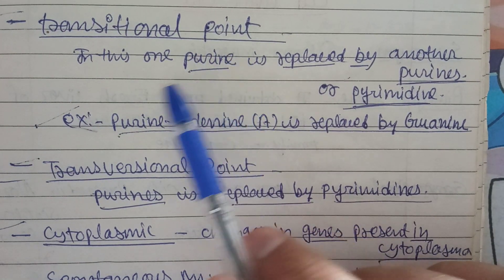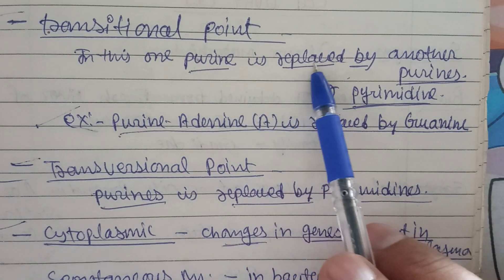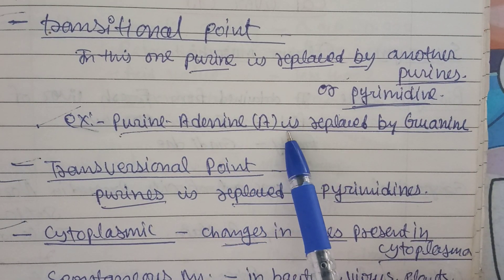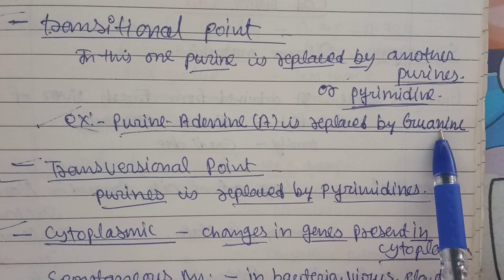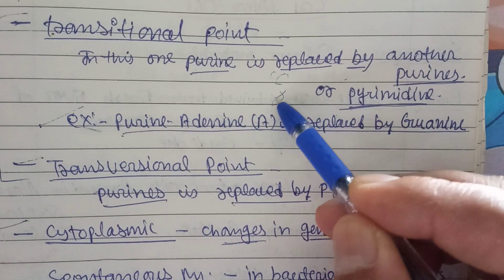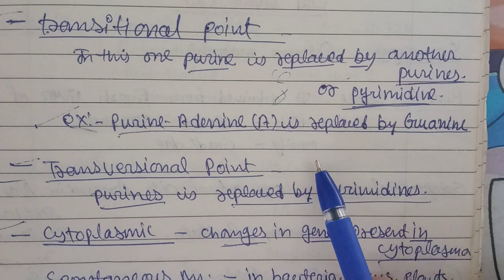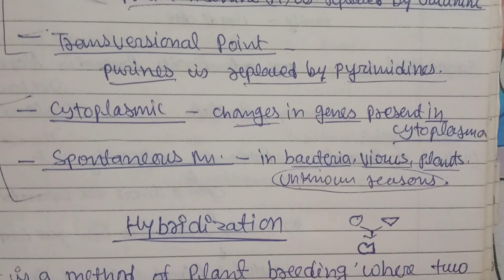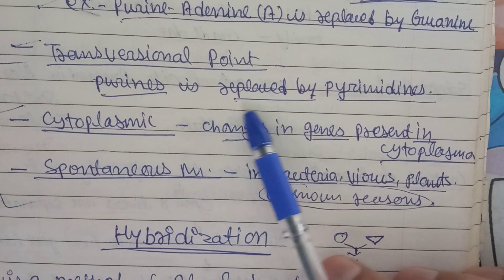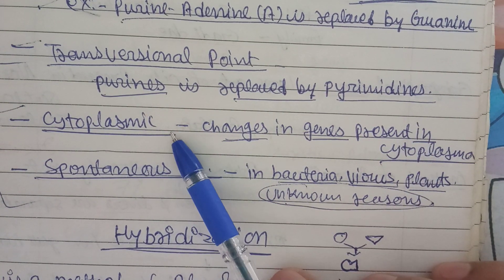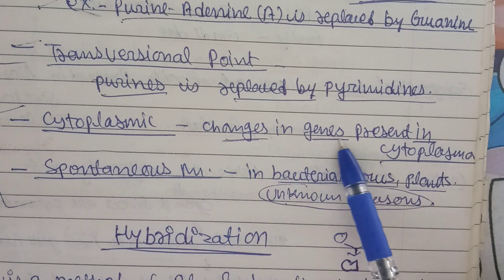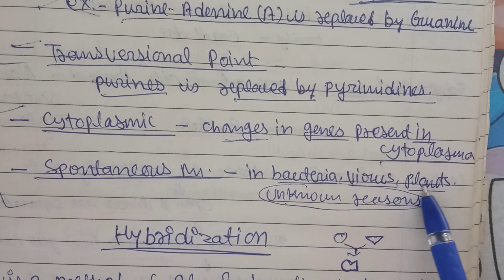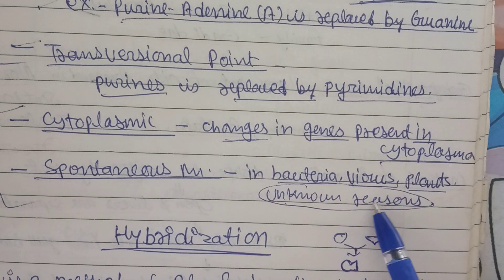The third type is transitional point mutation, where a purine is replaced by another purine or pyrimidine. For example, adenine is replaced by guanine in DNA, as in the Watson-Crick model. Transversal point mutation is where a purine is replaced by a pyrimidine. Cytoplasmic transversal point mutation involves changes in genes present in the cytoplasm. Spontaneous mutations in bacteria, viruses, or plants occur for unknown reasons.